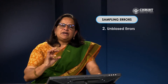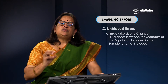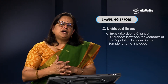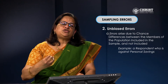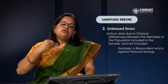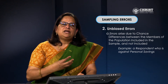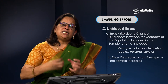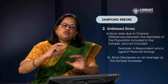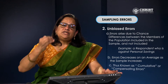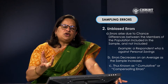Unbiased errors arise due to chance differences between members of the population included in the sample and those not included. For example, during PhD research on saving habits of households in Kerala, one respondent was completely against personal savings, believing the government should provide social security. Such cases are rare — only one or two in 500 respondents. These errors decrease on average as the sample size increases and are known as cumulative or compensating errors; one or two outlier respondents will not significantly affect the result.